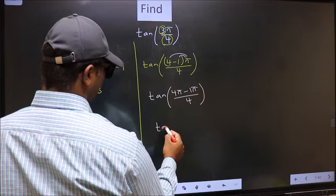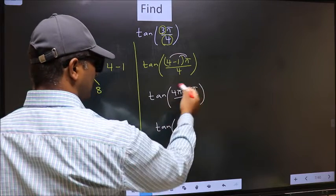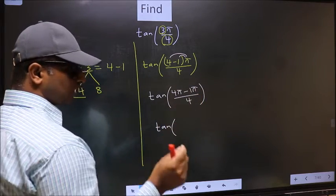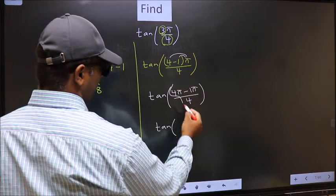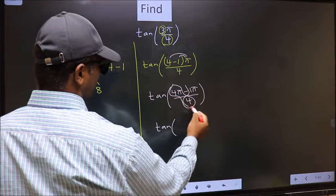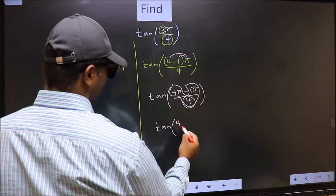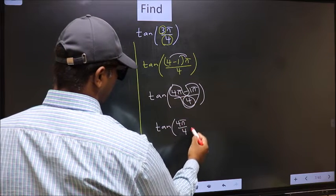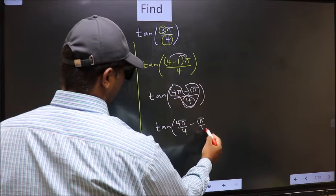Now, tan. Over here, you should split the denominator in this way. That is 4π/4 minus 1π/4.